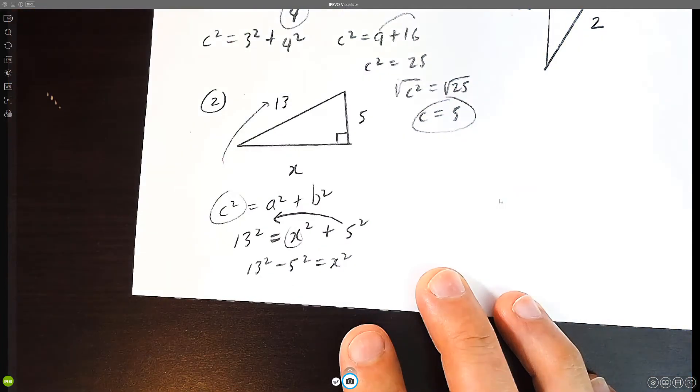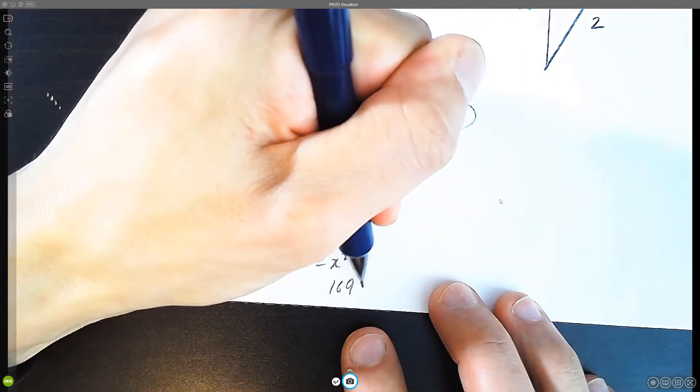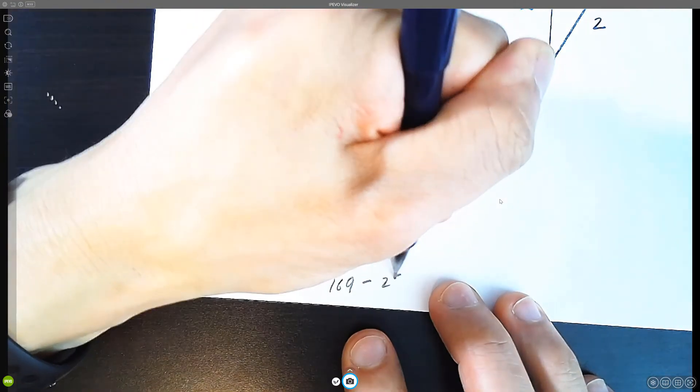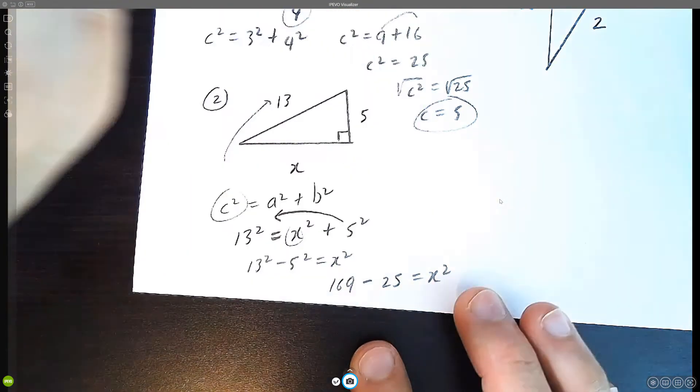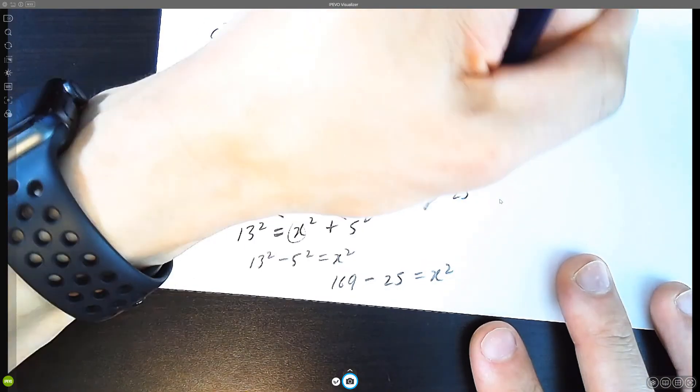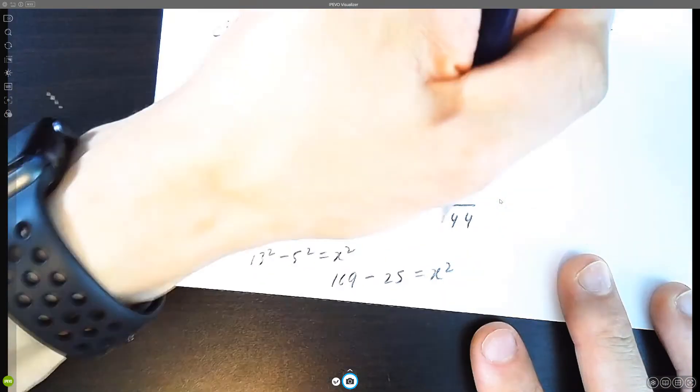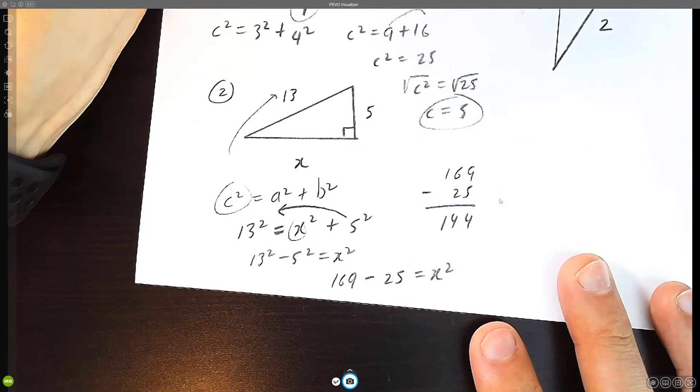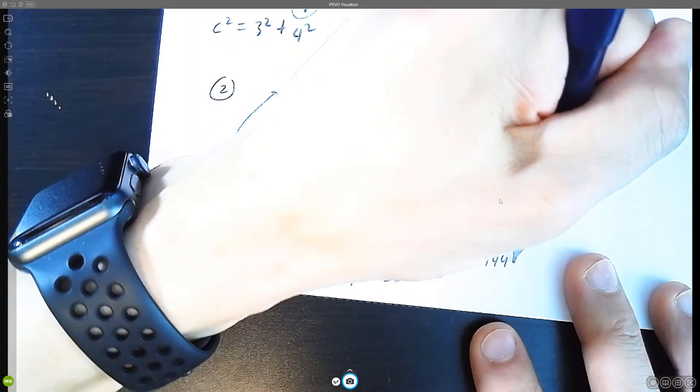What's thirteen times thirteen? You can work it out. It's 169. What's five times five? It's 25 equals x squared. What's 169 minus 25? It's 144. So 144 equals x squared.